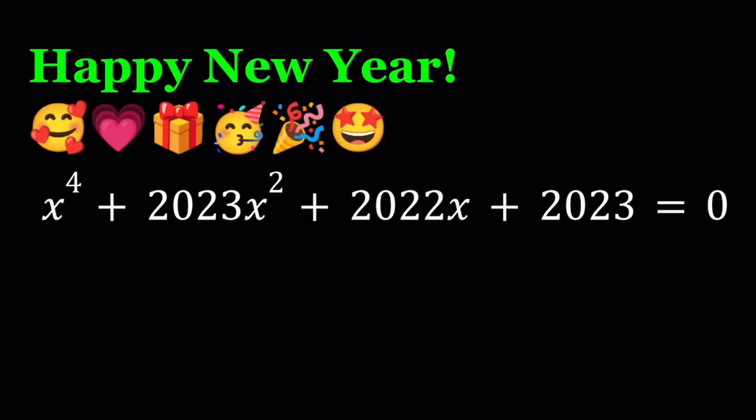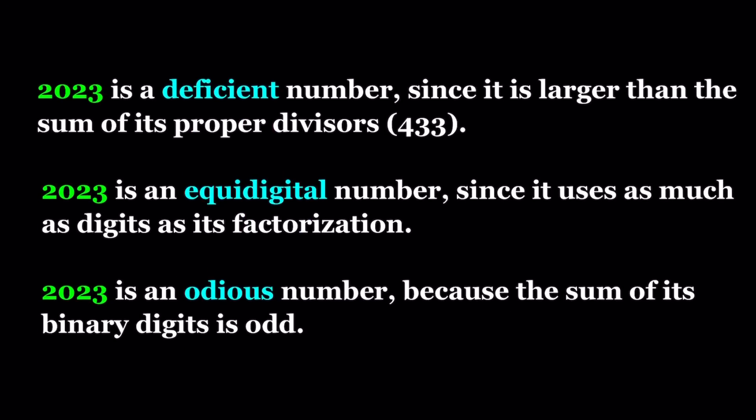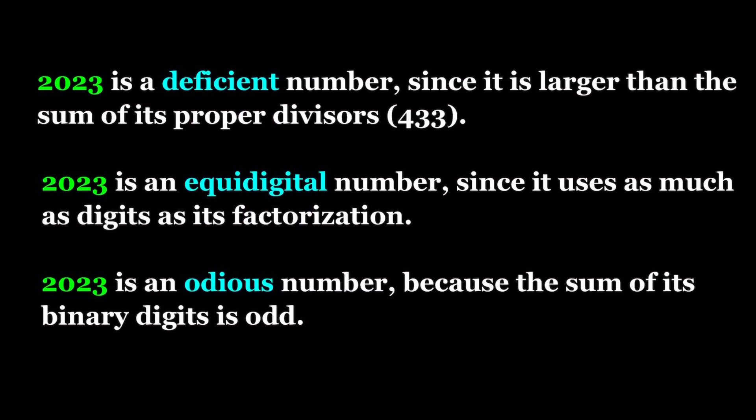But before we start solving this equation, let's take a look at some properties of this year's number, 2023. First of all, 2023 is a deficient number. Some numbers are deficient, some are abundant, and some are perfect. Deficient means that the sum of the proper divisors is less than the number itself. In this case, the sum of the proper divisors of 2023 is 433. I'm also going to show you how it can be factored on the next page.